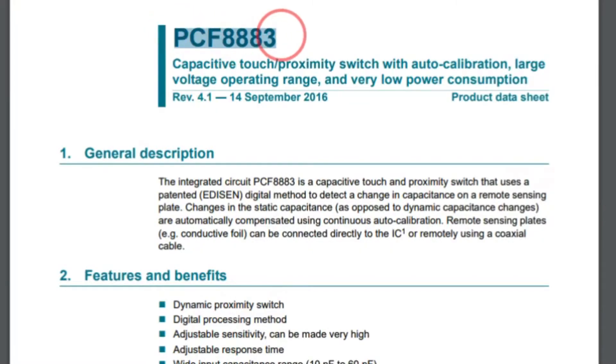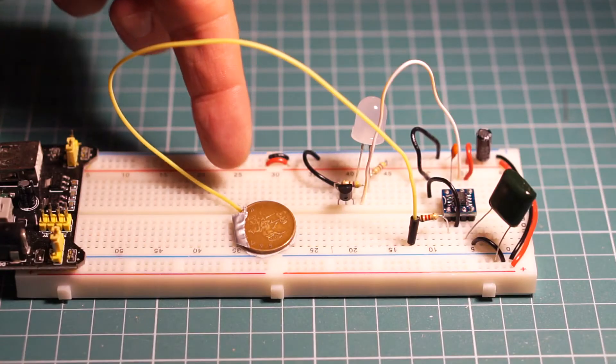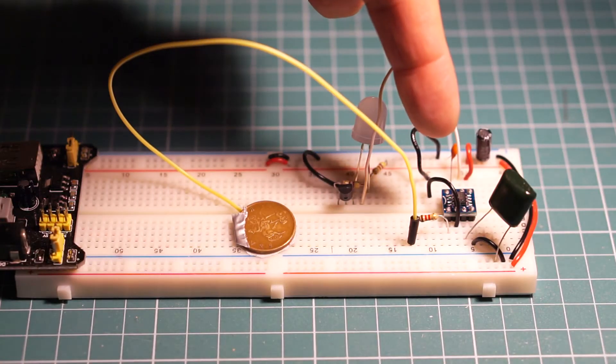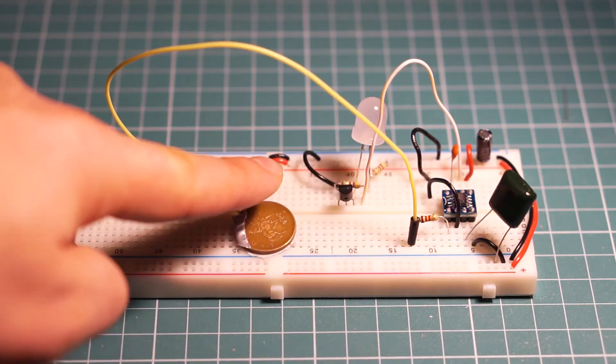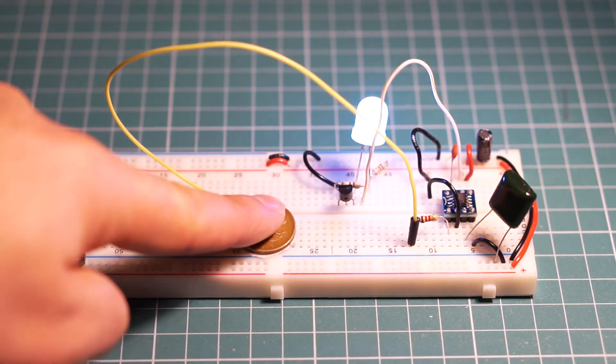The chip works by detecting small changes in capacitance. This is the ability of objects to store electrical charge. Here we have the penny connected to the chip with a wire. When I touch the coin, my body changes its capacitance. The chip detects this and responds by turning on the LED.